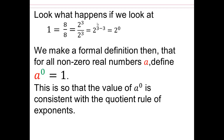So when you have a base raised to an exponent of 0, you're going to end up with 1. Why is that? Because of the quotient of exponents that we were looking at before. To make it consistent, we have to have 2 to the power of 0 equaling 1. A lot of times people think a to the 0 is 1 but they don't understand why. But if you remember why, you will have an easier time remembering the rule.